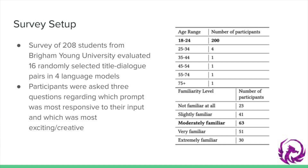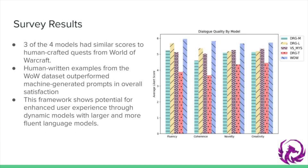Survey respondents were recruited from students enrolled in computer science courses at Brigham Young University and were asked to evaluate a random sample of 16 title-dialogue pairs taken from three of the four models, which were also randomized. In total, 208 people responded to our survey. We were able to find that three of the four language models were able to achieve Likert scores similar to those received by human-crafted quests from the World of Warcraft video game.